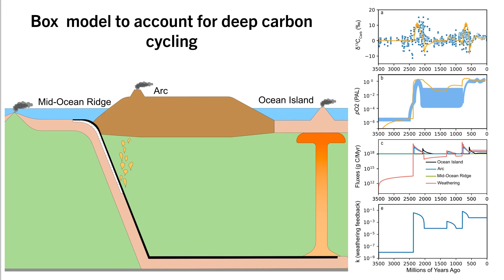K is the only variable we are prescribing changes to in the model. At 2.4 billion years ago we increased K, which increases the weathering flux resulting in increased carbon burial and subduction. This increased carbon burial results in an increase in oxygen, and shortly after there is an increase in the arc CO2 flux due to the release of subducted carbonates. After the initial increase in K, we prescribe K to decay to a lower value, and therefore the weathering flux also decays. The arc flux rapidly responds to the surface changes, so the arc flux decays as well.